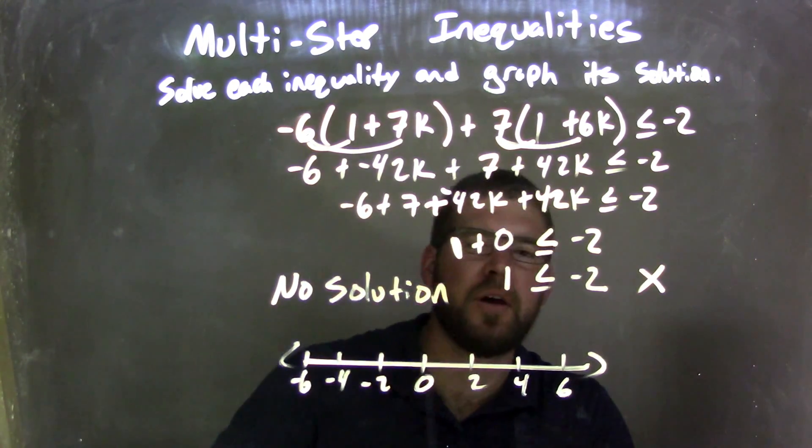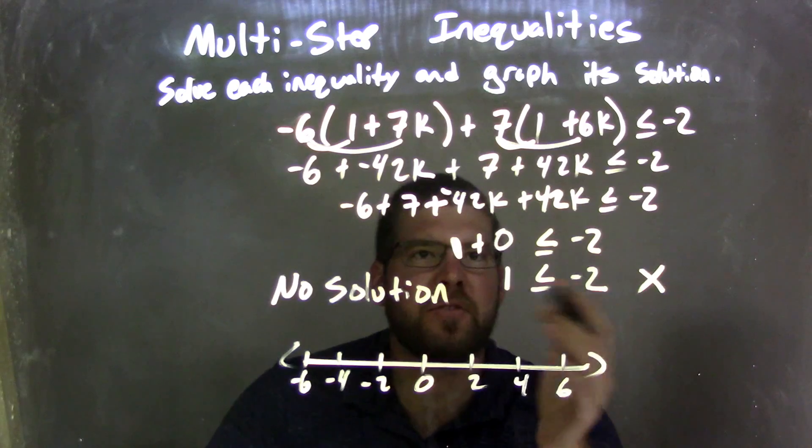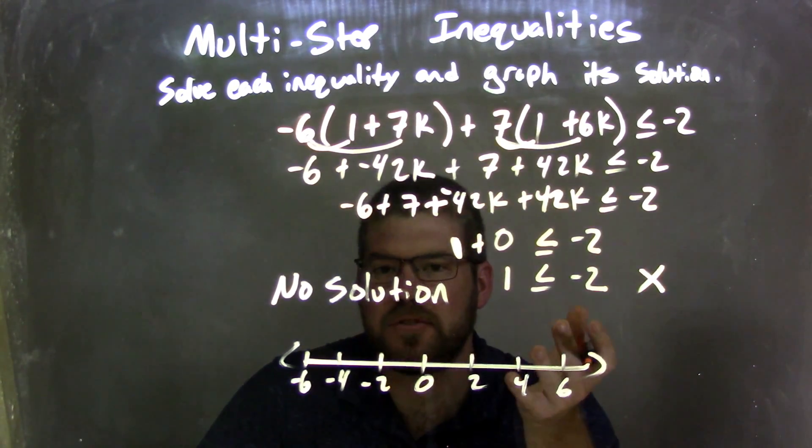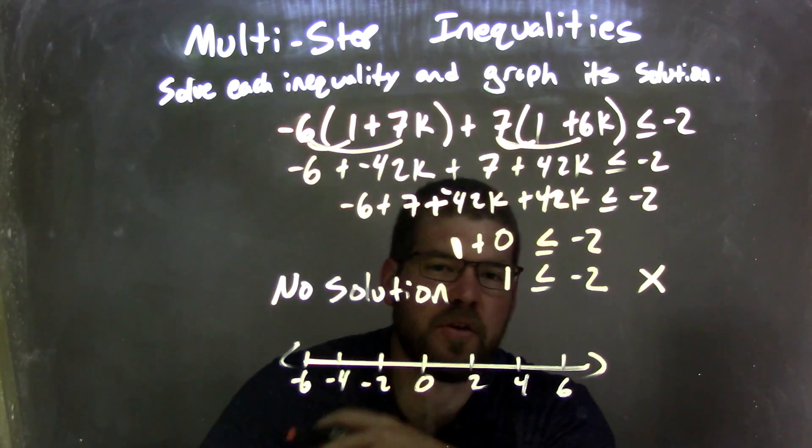No solution because this is not a true statement. That means there's no value that we can put in for k that makes us true. So we have no graph. Our answer is just no solution, and there's no graph.